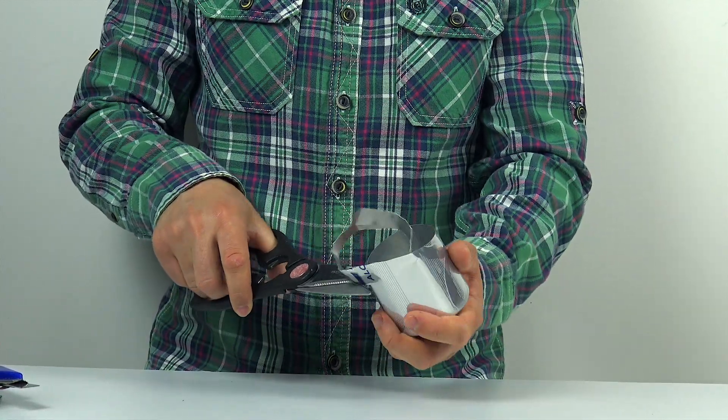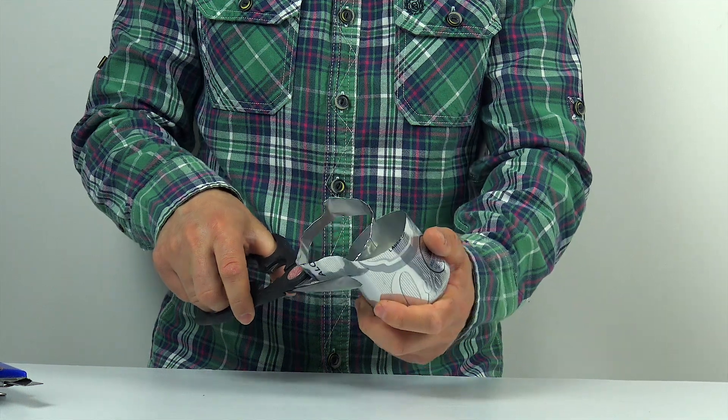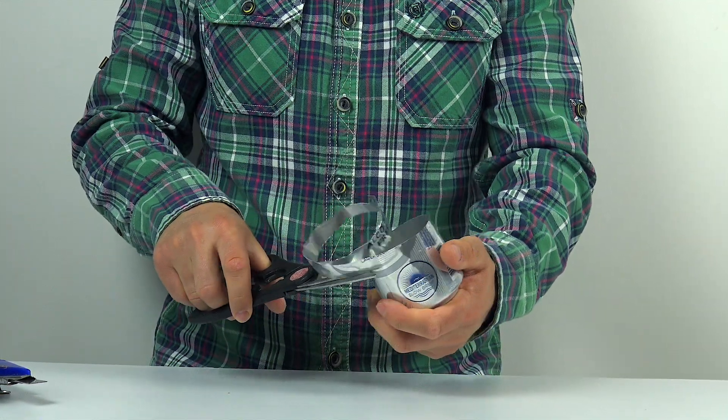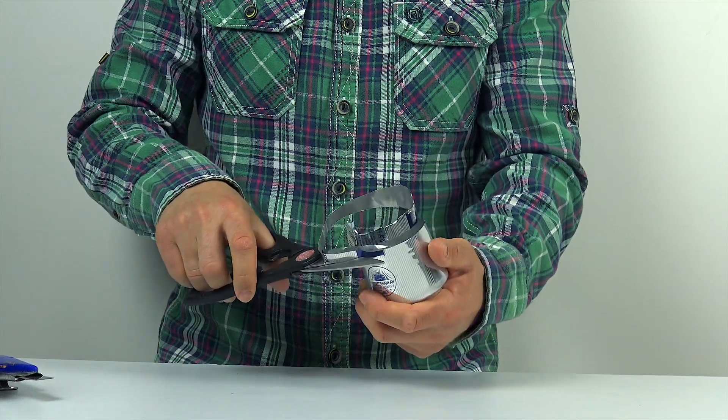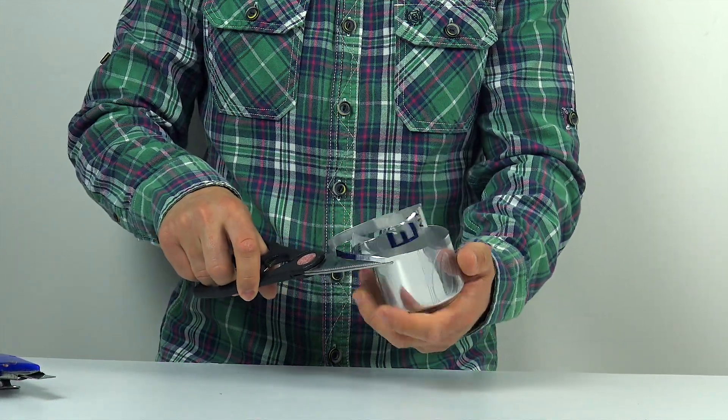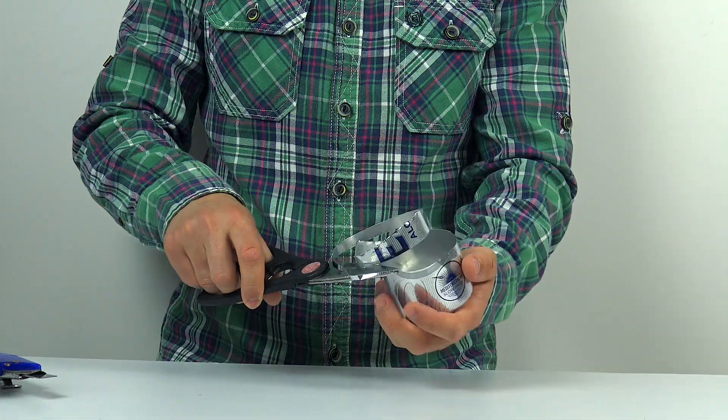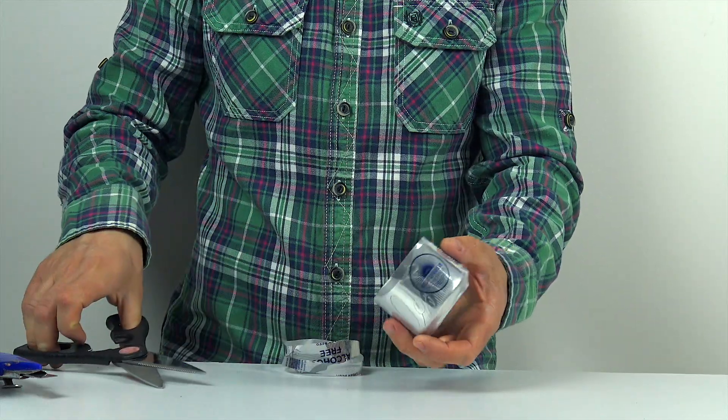For our first idea, you'll need a regular aluminum can - Coca-Cola, Fanta, or even that weird soda no one drinks but somehow still ended up in your fridge. Cut the can in half, carefully, not like in an action movie, but like a true DIY master.